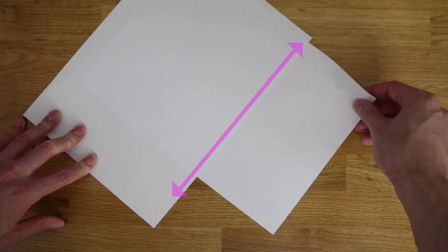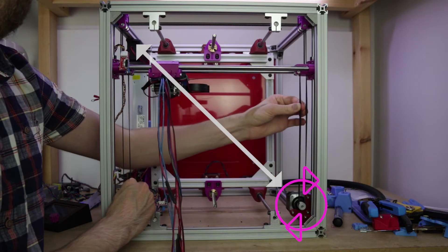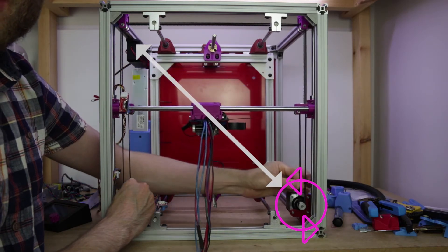So let's look at a CoreXY printer and see how that also does the same thing. You move just the right-hand motor and you get just the same diagonal movement.